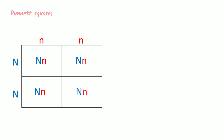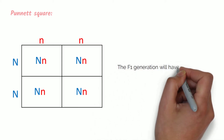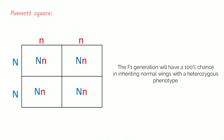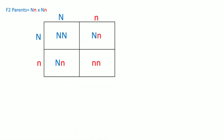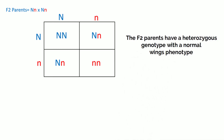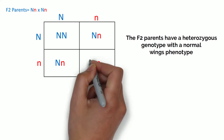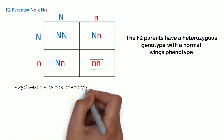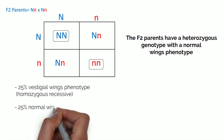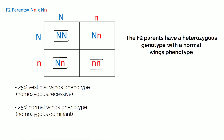This can also be shown in a Punnett square. The parental gametes are shown on top of the table. Looking at the results, the F1 generation will have a 100% chance of inheriting normal wings with a heterozygous genotype. For the F2 generation the chances look different — the F2 parents have a heterozygous genotype with normal wings phenotype. The offspring have a 25% chance of vestigial wing phenotype with homozygous recessive genotype, 25% homozygous dominant normal wings genotype, and 50% heterozygous genotype with normal wings phenotype.